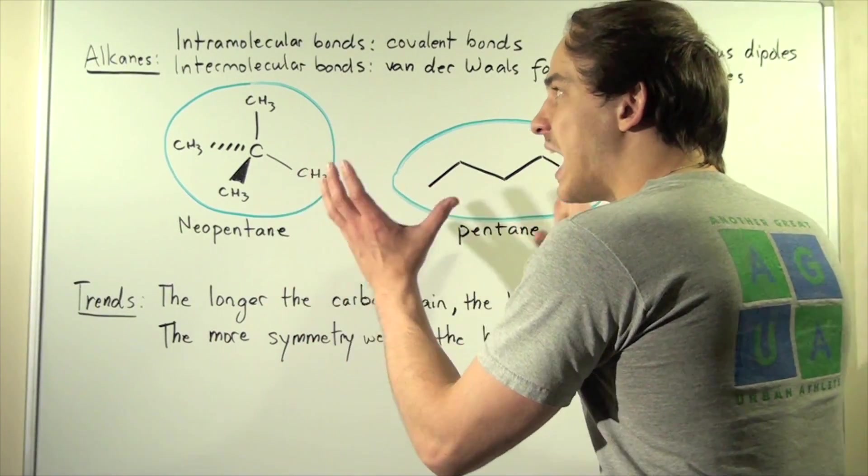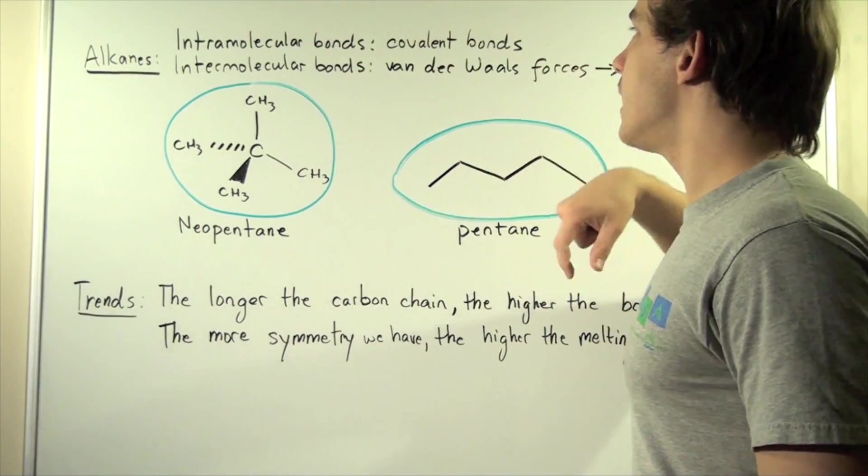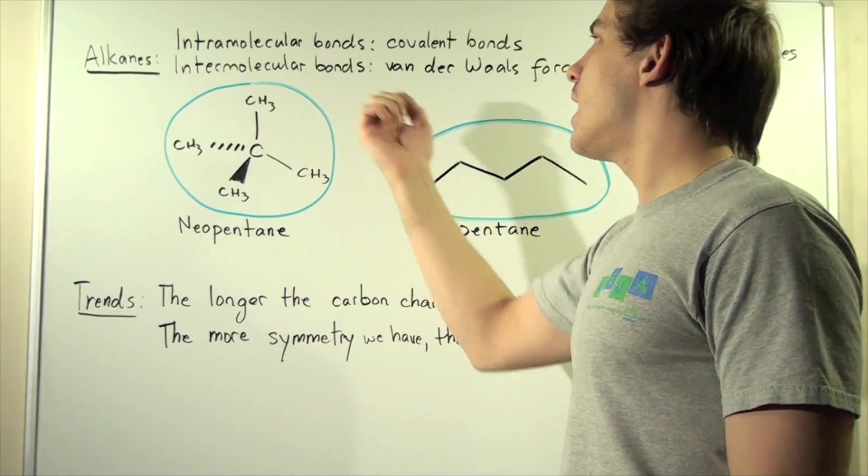So for both types of alkanes, and in fact for all alkanes, the intramolecular bonds are covalent bonds. What about the intermolecular bonds?